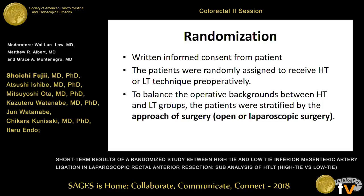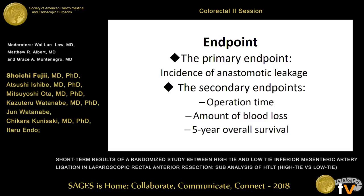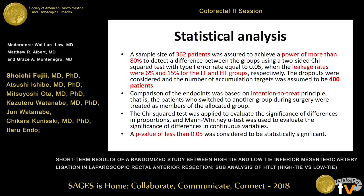The primary endpoint was the incidence of anastomotic leakage. The secondary endpoints were operation time, amount of blood loss, and five-year overall survival. To achieve a power of more than 80%, the assumed incidence of anastomotic leakage was 6% in low-tie and 15% in high-tie, respectively. The sample size was calculated to be 362. Therefore, we set the number of target patients to 400.